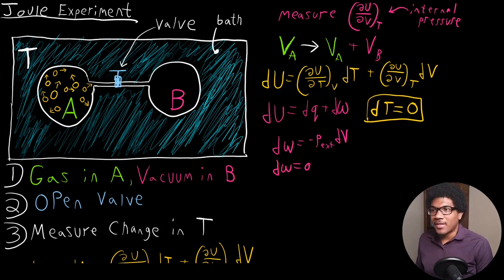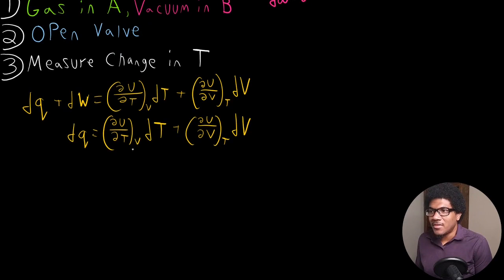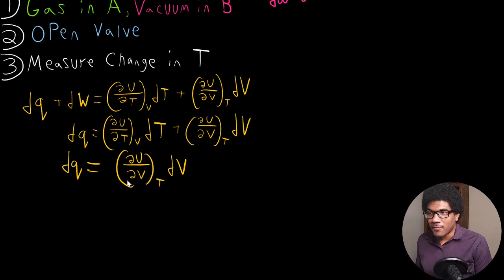So what does that mean for us down here? Well, it means that dT, since dT is zero, that term goes away. So dQ is just going to be equal to your internal pressure times dV. So now we've gotten down to this simplified expression.